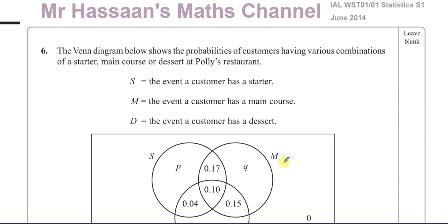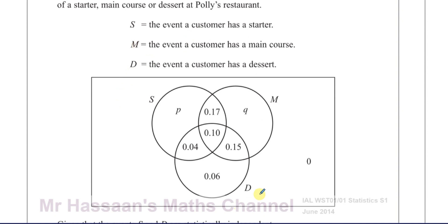We're given a Venn diagram which shows the probabilities of customers having various combinations of a starter, main course, or dessert at Polly's restaurant. S stands for starter, M for main course, and D stands for dessert. These numbers represent the probabilities of people choosing various combinations of dishes.